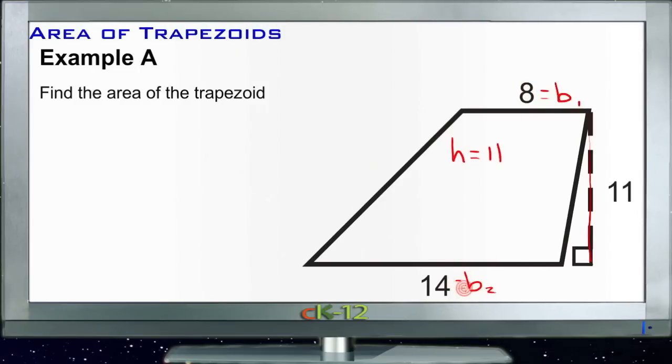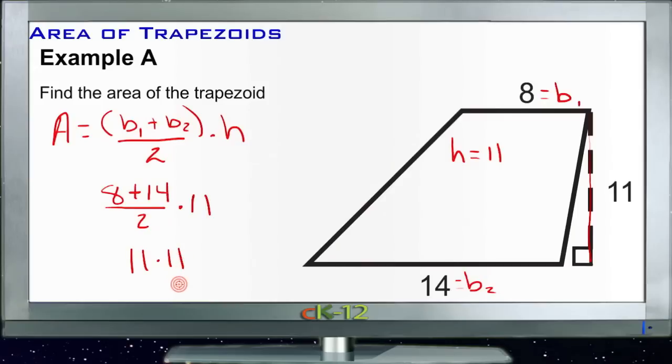So we have our area equals base 1 plus base 2 divided by 2, so the average of the two bases, times the height. Let's plug in our values: we have 8 plus 14 over 2 times 11. Well, 8 plus 14 is 22 divided by 2, that's 11, so now we have 11 times 11. 11 times 10 is 110, so 11 times 11 would be 121. 121 square units.